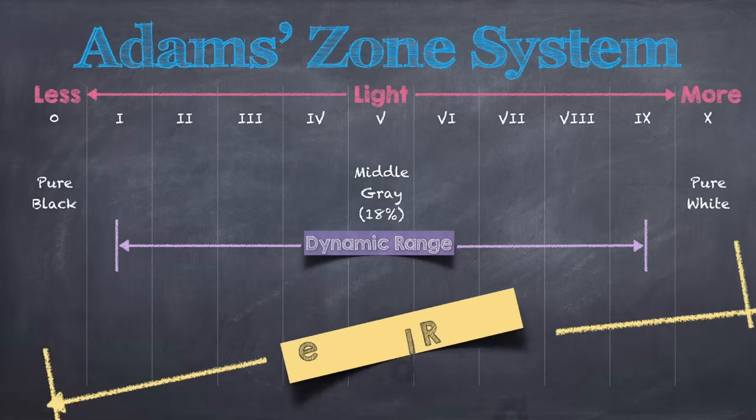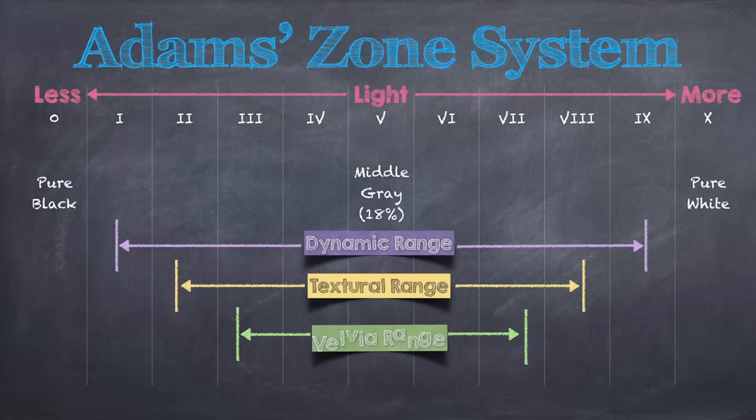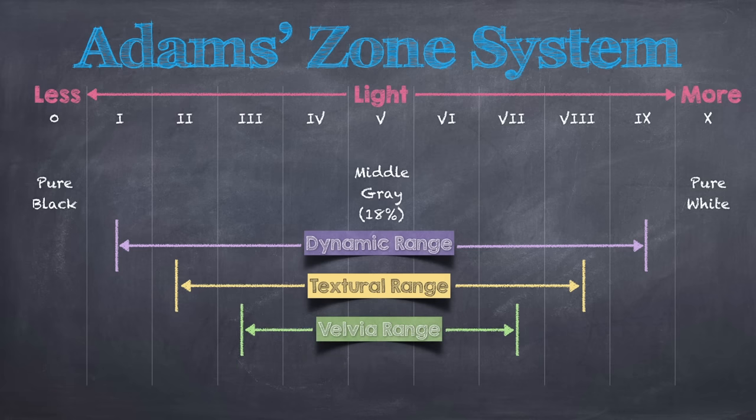Realistically, however, Adams discusses that more often than not, texture or details will only be seen from zones 2 to 8 for a total of 7 stops of light. As far as Fujifilm Velvia is concerned, the range with which we are able to record texture or detail in both the shadow and light areas of the image decreases to just 5 stops of light.